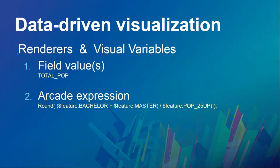You can pass attributes into renderers and visual variables either using the field name directly, or by passing in an Arcade expression — useful when you want to calculate a new value based on multiple existing attributes.